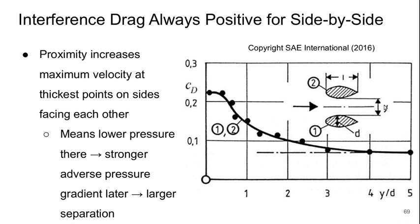So here's our side-by-side bodies separated by some distance y, so the ground distance would be y over 2. And this interference drag is always positive.